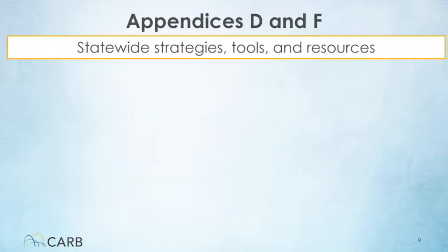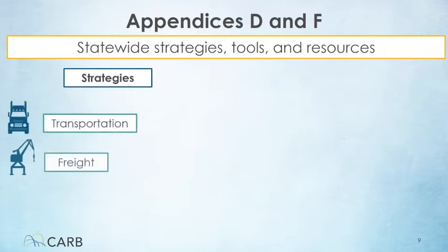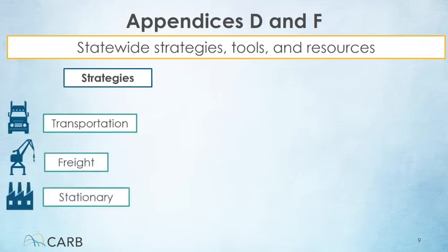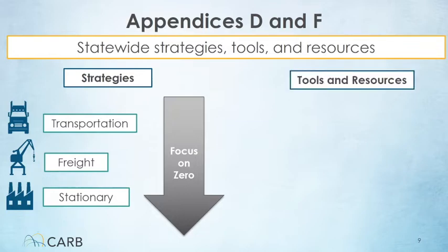Appendices D and F include information on statewide strategies, tools, and resources to support community-scale emission reductions. This includes a suite of new strategies to reduce emissions from transportation, freight, and stationary sources with a focus on zero emissions. CARB is also developing a variety of tools and resources to support communities, air districts, and other stakeholders in achieving exposure reductions.